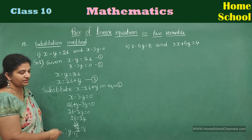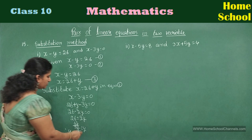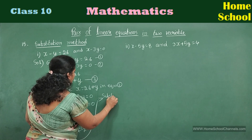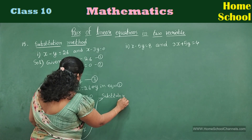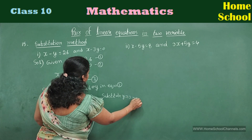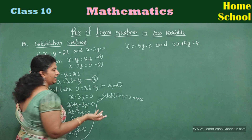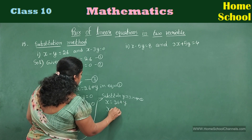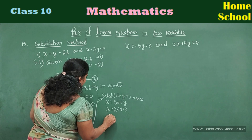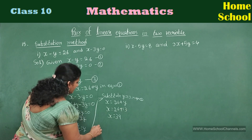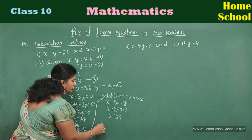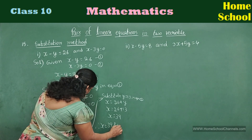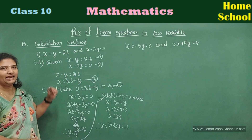We need to find x and y value. We got only y value. Substitute this y value in any one of the equations. Let me take x is equal to 26 plus y. x is equal to 26 plus 13. x is equal to 39. Therefore, finally, the solutions of the two pair of linear equations are x is equal to 39 and y is equal to 13.